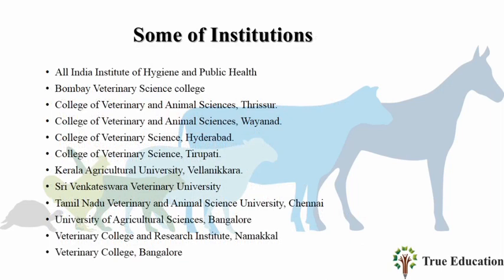Some Institutions: All India Institute of Hygiene and Public Health, Bombay Veterinary Science College, College of Veterinary and Animal Sciences Thrissur, College of Veterinary and Animal Sciences Wayanad, College of Veterinary Science Hyderabad, College of Veterinary Science Tirupati, Kerala Agricultural University Vellanikara.